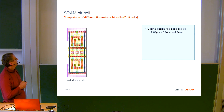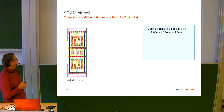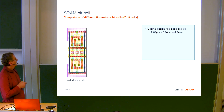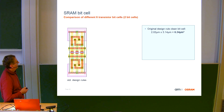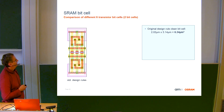With this standard approach you have certain design rules — each contact has a certain distance to the next metal line, so you cannot squeeze them closer together without violating distance rules. What you can try is to share some contacts; for example, going up to metal two you can share one contact to both bits to squeeze down the size a little bit. With such an approach, at 180 nanometers, you have around 6.3 square micrometers per bit cell.